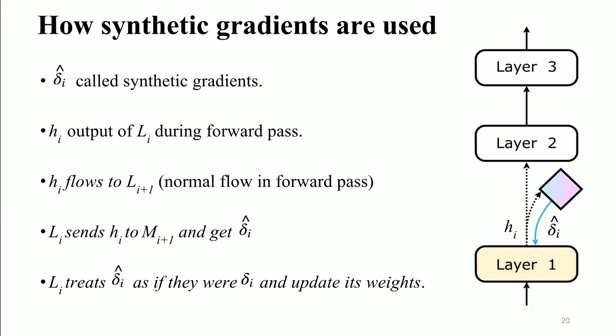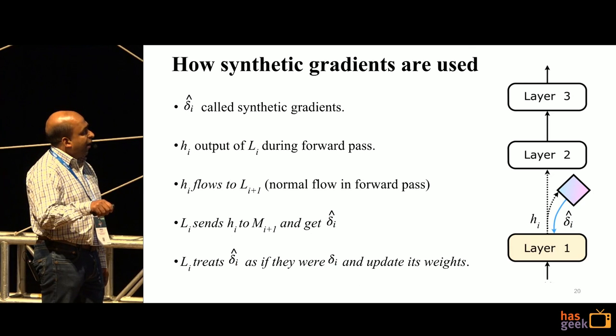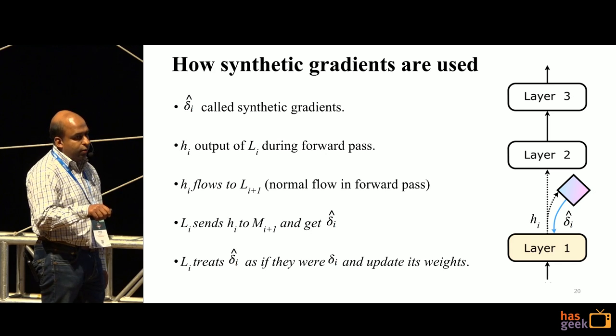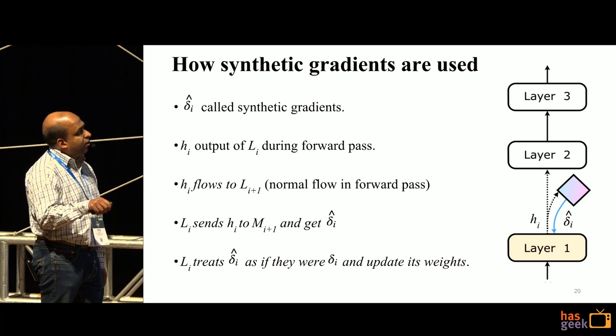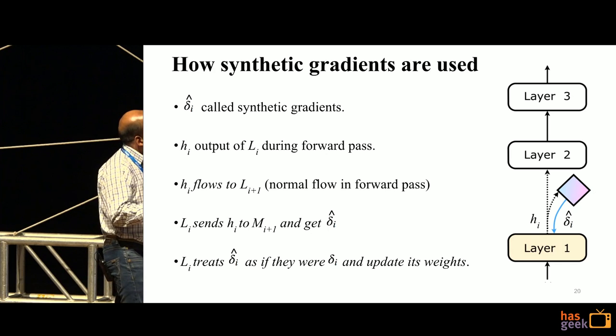Assume for now there are some magical boxes available to every layer. If a layer gives some input to this box, it returns an approximation of the actual gradient. Every layer L_i has access to a magical box — an oracle — which when queried with some input gives an approximation of the actual gradient. This estimate is what they call synthetic gradients.